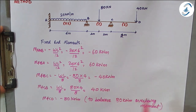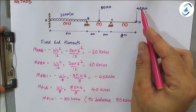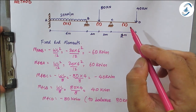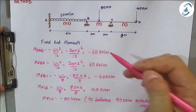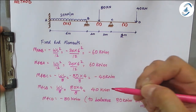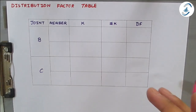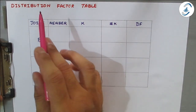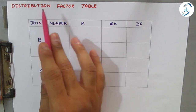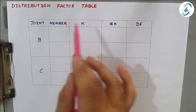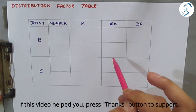This −80 kilo-newton meter counteracts the positive clockwise 80 kilo-newton meter overhang moment. This is the only change in calculating fixed end moments. The next two changes occur in the moment distribution table. Once fixed end moments are found, the next step is to calculate distribution factors for the joints.